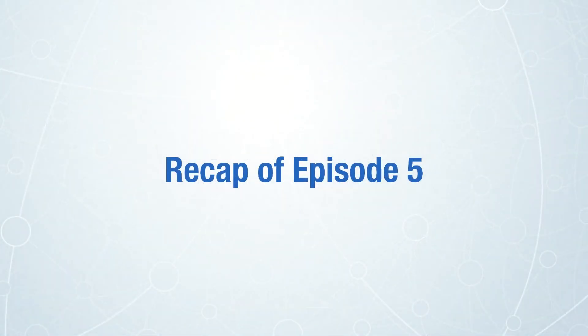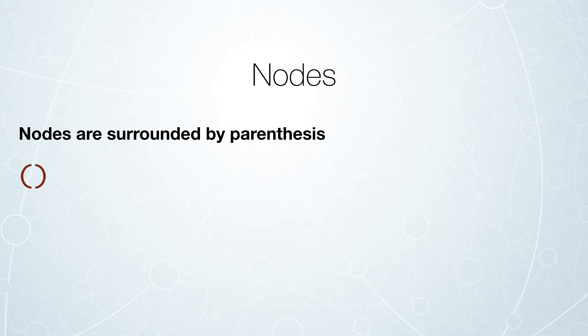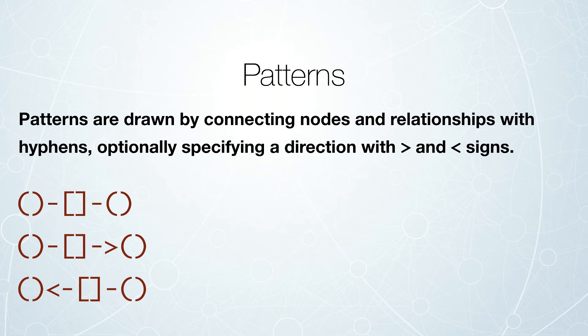Let's first give a recap of Episode 5. In Episode 5, we learned that Cypher is just ASCII art patterns, and these are patterns that are drawn with nodes which are surrounded by parentheses and also drawn with relationships as part of the patterns. Your patterns are ASCII art because you're indicating the directionality of relationships using greater than and less than signs. Optionally with Neo4j, you can actually query without regard to direction.